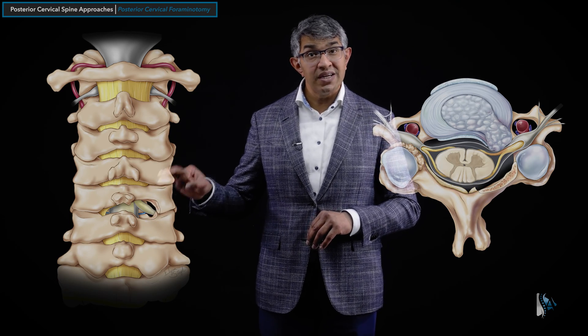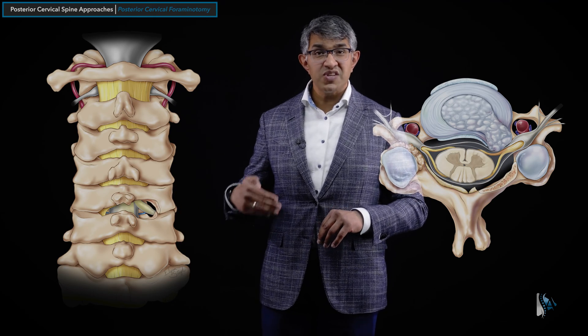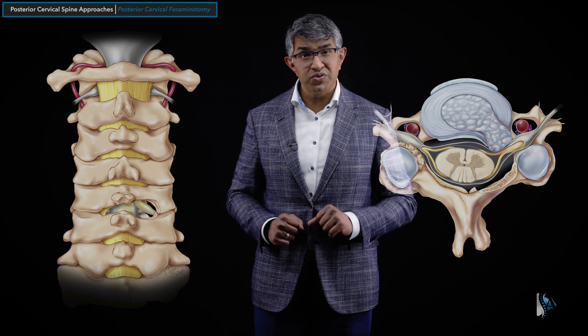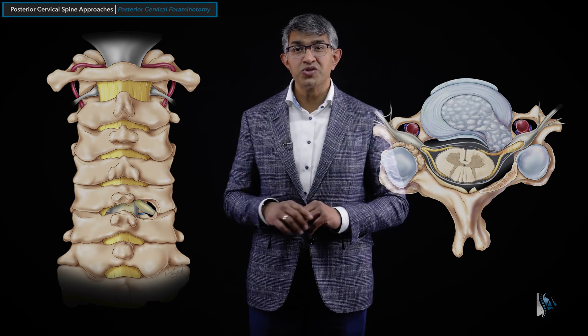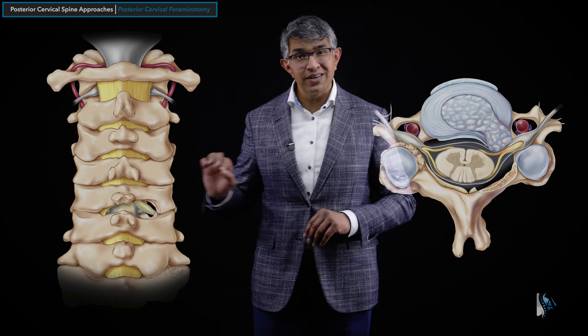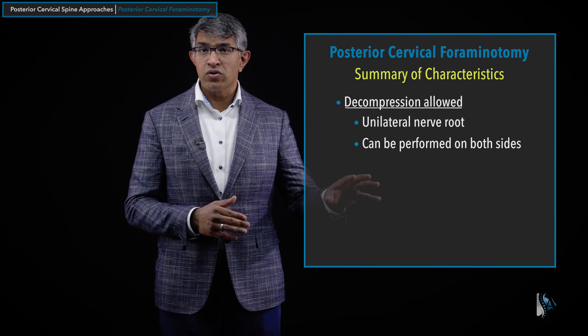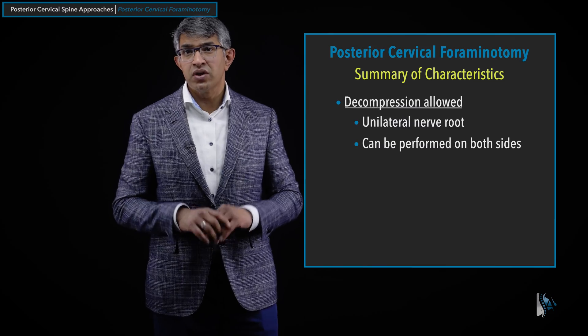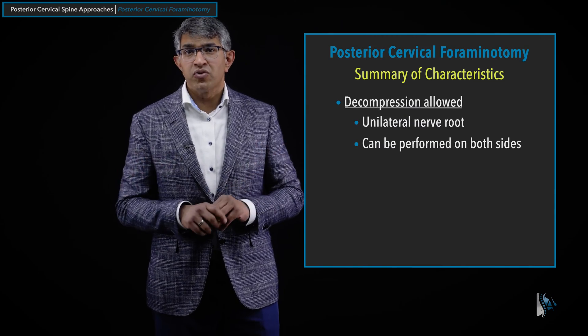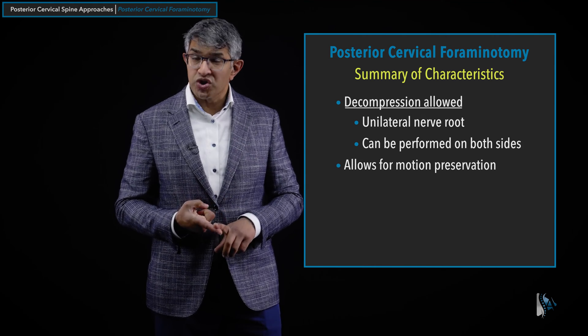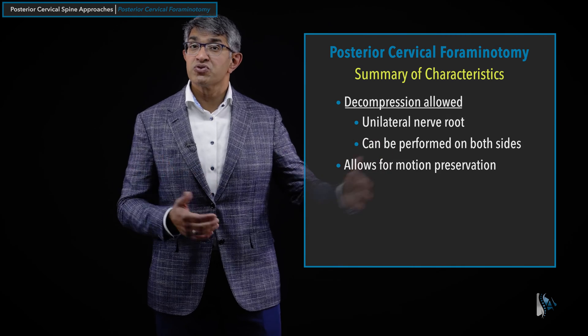You'll notice you're taking off a little bit of the joint, but in general you have not destabilized it. So this is a motion-preserving procedure — maybe one of the best motion-preserving procedures we have — because you're really not messing with the disc. You're just removing part of the bone, part of the ligament, and a little bit of the joint to decompress that nerve root. A laminoforaminotomy allows for decompression that is usually unilateral; it preserves motion. It may be one of the best motion-preserving procedures available.